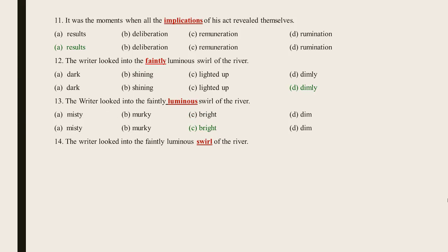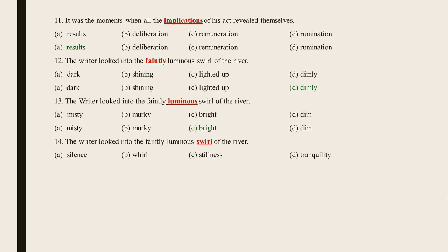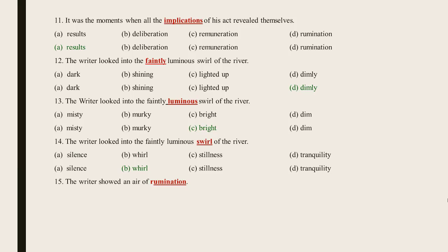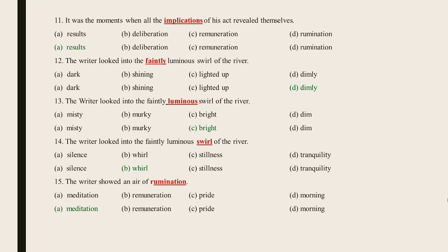Statement 14: The writer looked into the faintly luminous swirl of the river. The underlined word is swirl — the right answer is Whirl. Statement 15: The writer showed an air of rumination. The underlined word is rumination — the right answer is Meditation. Dear students, I hope you have understood the whole lesson. Thank you for watching.